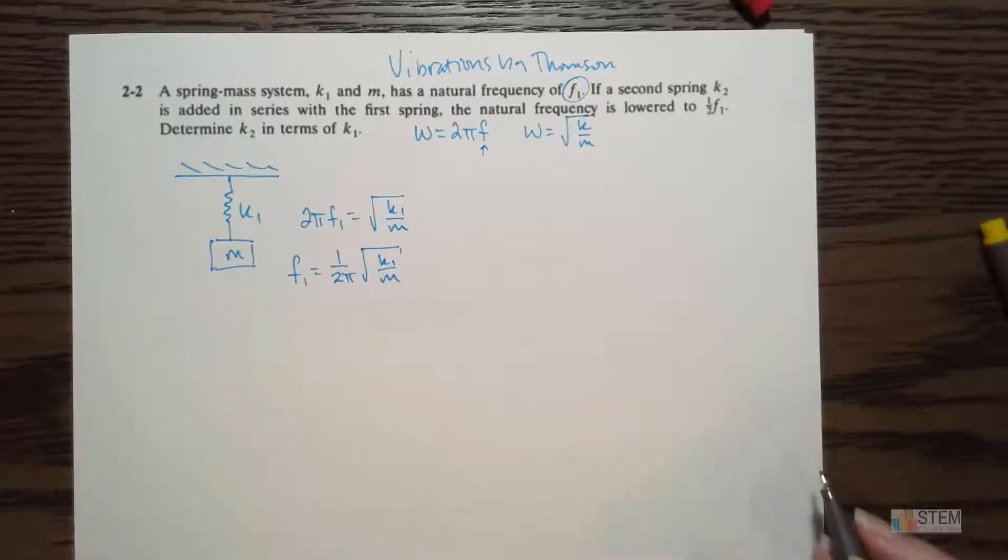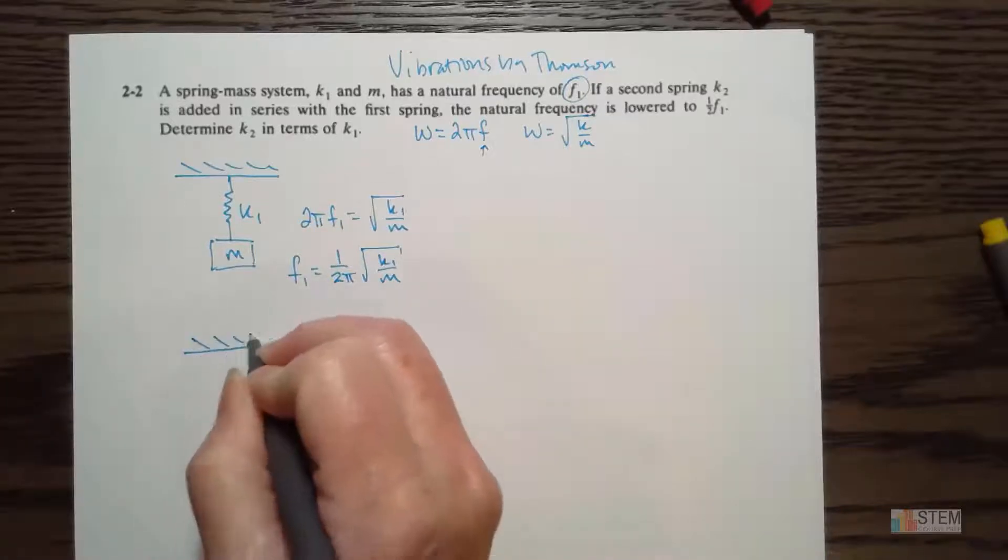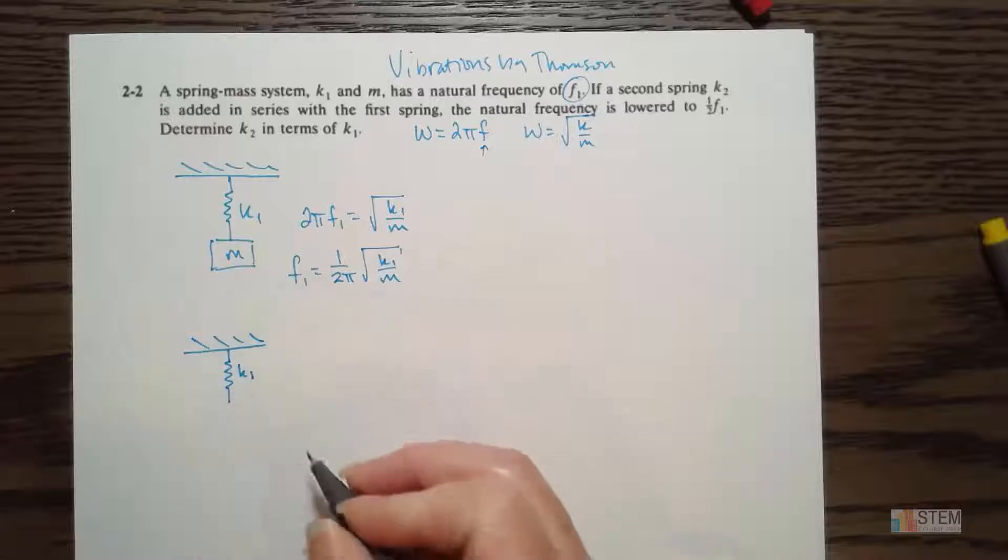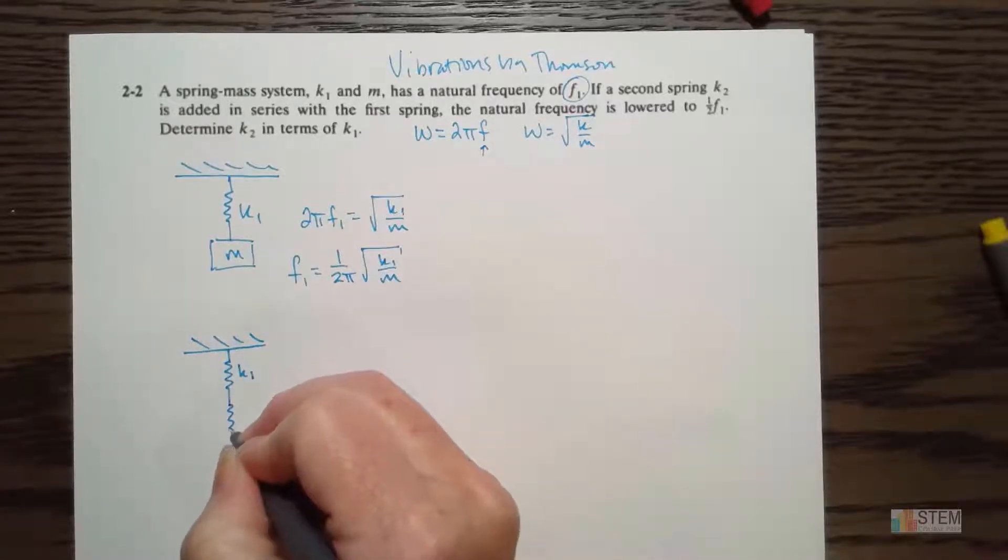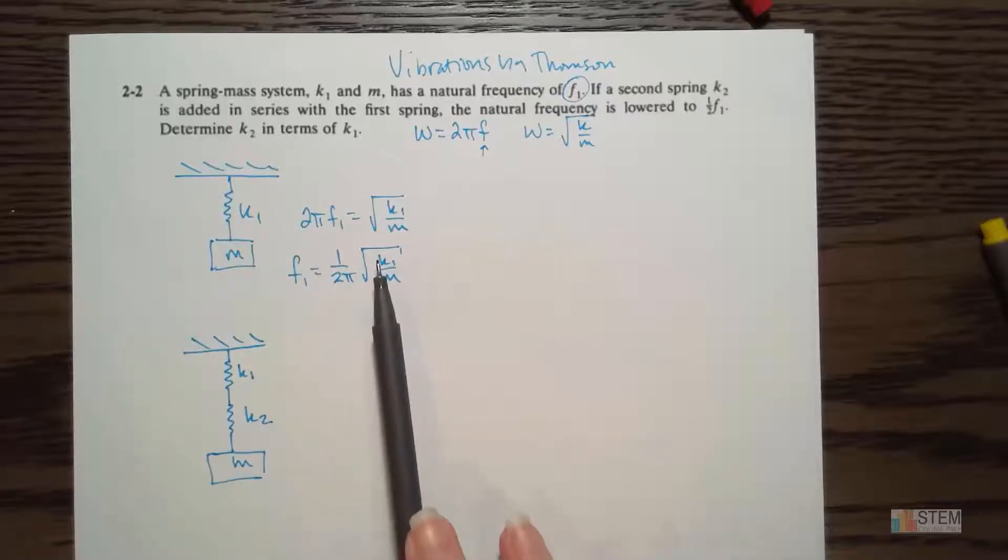So that's the natural frequency for this original system. Next thing we're going to do is we are going to add a second spring. Now, it tells us it's in series. So here's our original spring. If it's in series, it's going to follow along right underneath the original spring. So now we have k2, and then we're going to have our mass m.